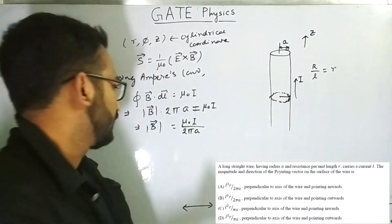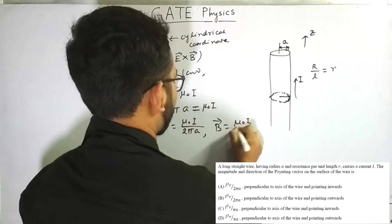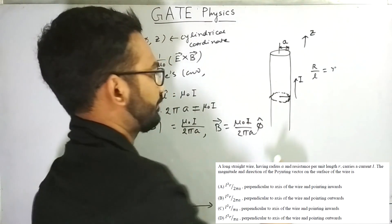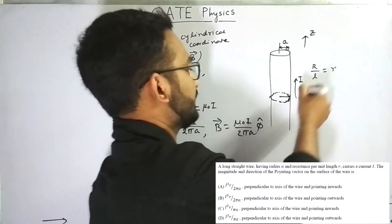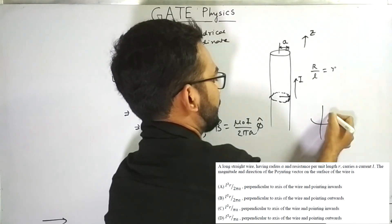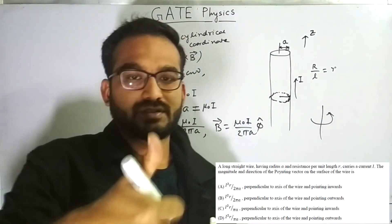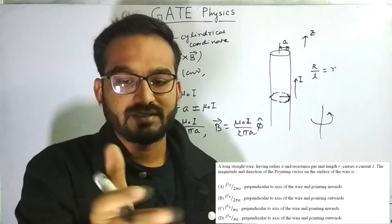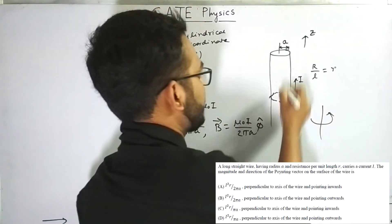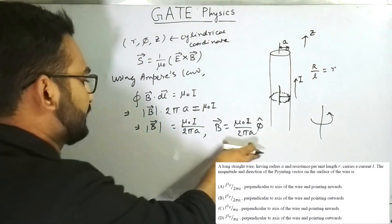Now for the direction: in vector notation B equals (μ₀i / 2πa) φ̂. In the cylindrical coordinate system, if your thumb points in the direction of current flow, the encircling fingers represent the direction of the magnetic field — that is, in the φ direction. And r is the perpendicular distance from the z axis. So this is the magnetic field.